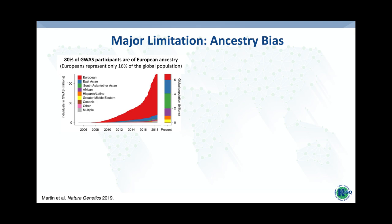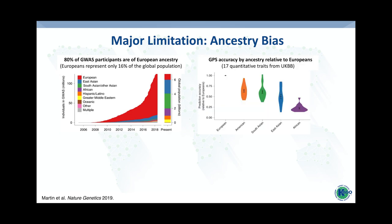Building polygenic risk scores based on European ancestry GWAS will create biased risk estimates. This was systematically tested using UK Biobank resources across 17 quantitative traits, comparing polygenic risk score accuracy when developed in Europeans and applied to other populations. There is a dramatic decrease in accuracy as you move away from European ancestry, and the greater the ancestral distance from Europeans, the greater the decline in performance.